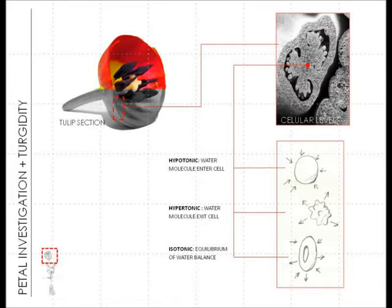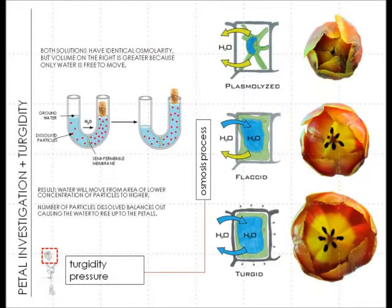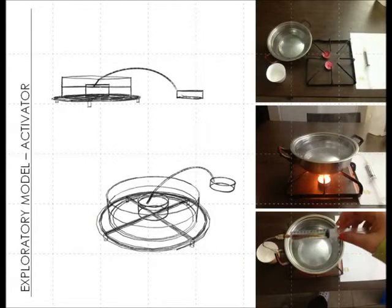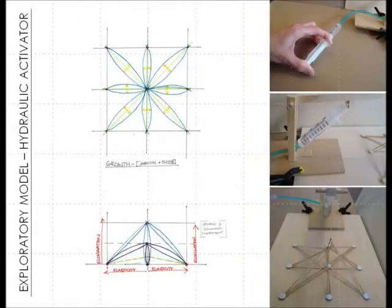Turgid pressure is caused by the osmotic flow of water from an area of low solute concentration outside of the cell and into the cell's vacuole, an area of higher solute concentration. The changes in the hypertonic and isotonic states cause photonastic responses independent of the stimulus's position. Model explorations were conducted to further analyze various ways of replicating how the tulip's response mechanisms function.